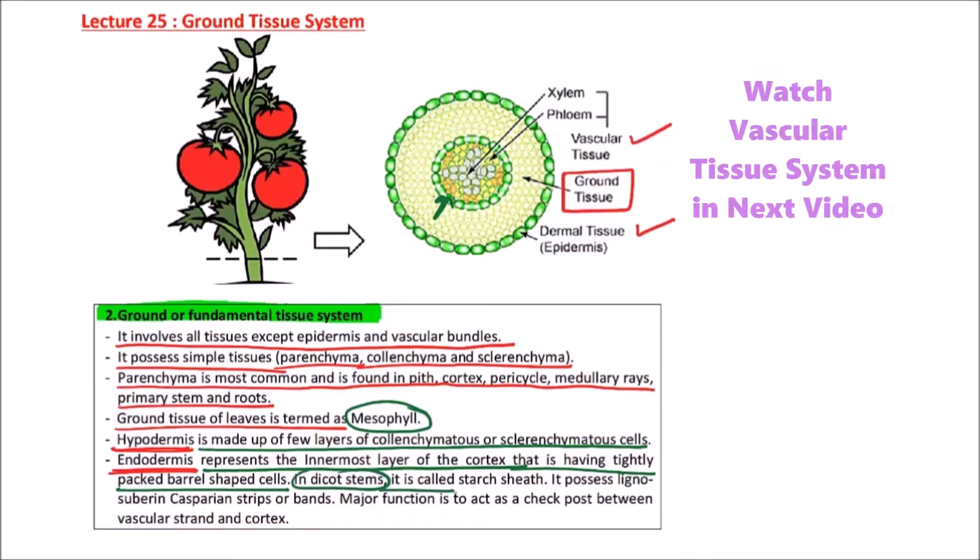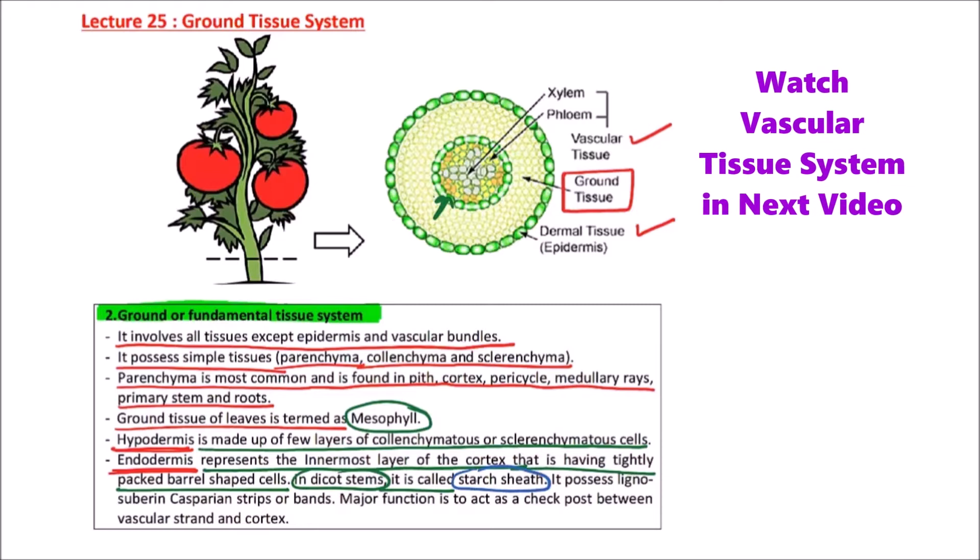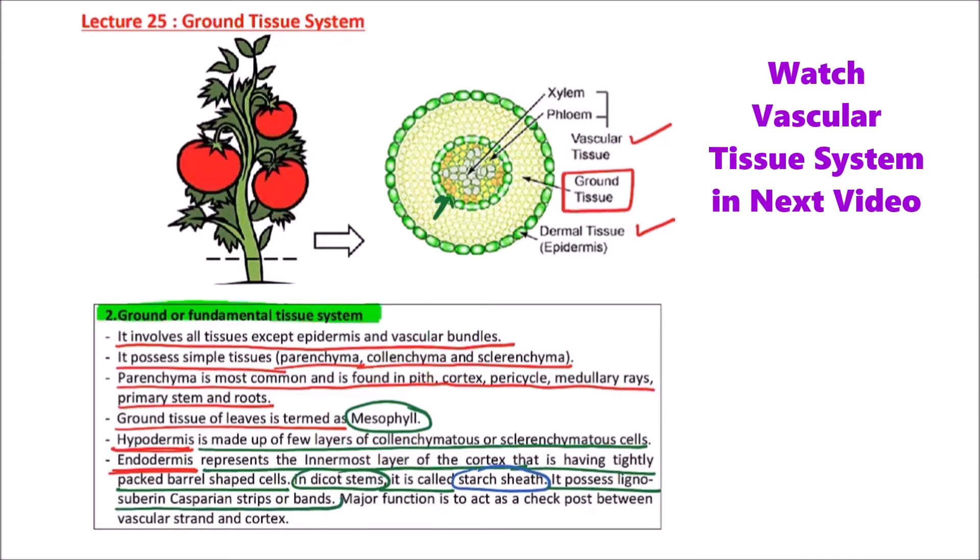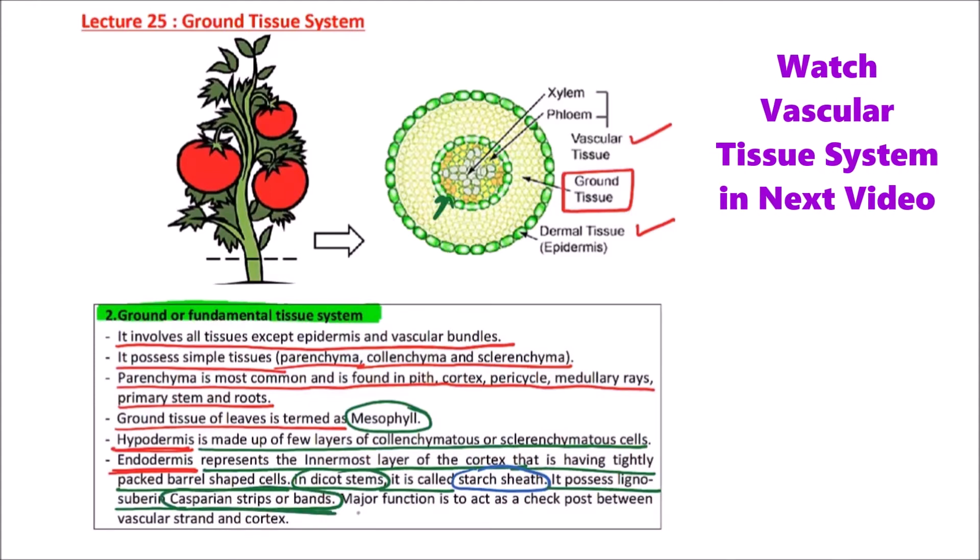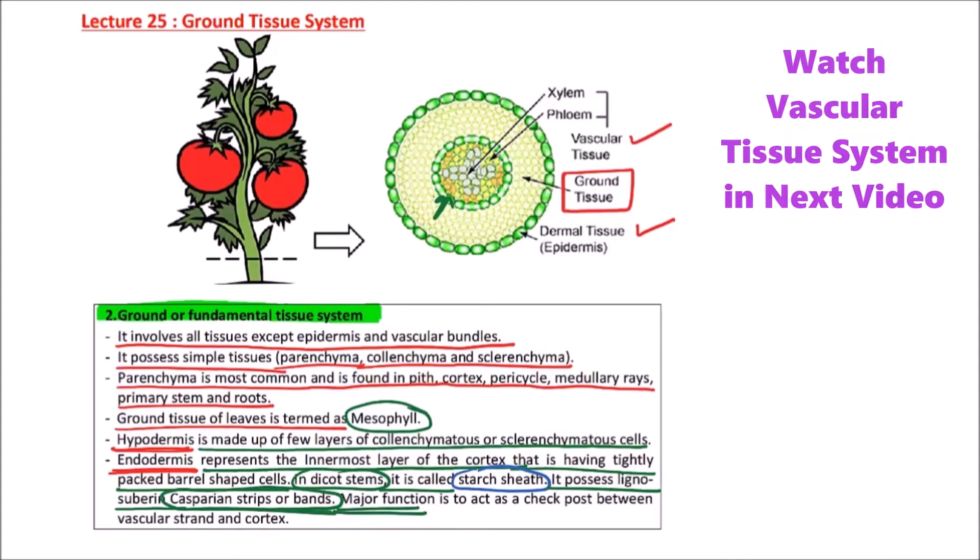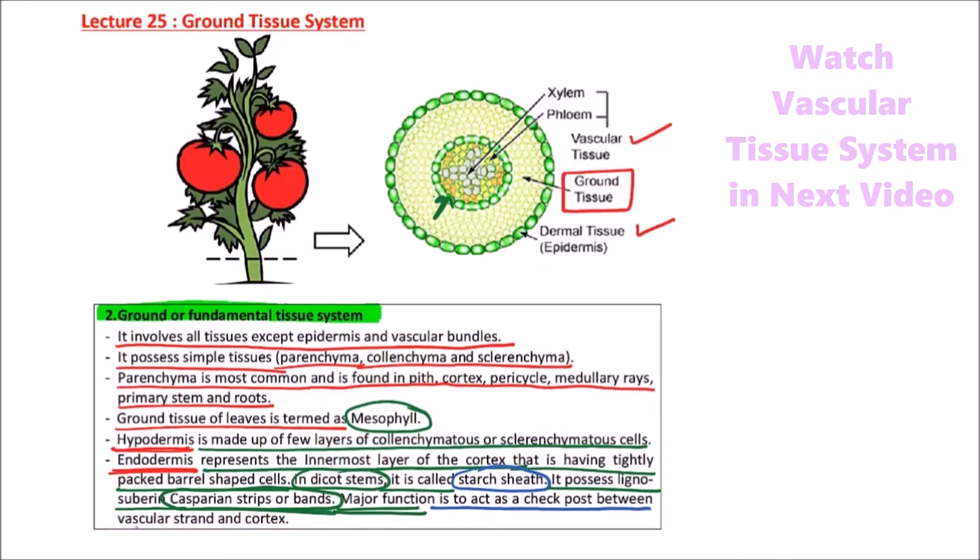In dicot stems, it is called starch sheath, and it possesses lignosuberin Casparian strips or bands. Major function is to act as a check post between the vascular strand and the cortex.